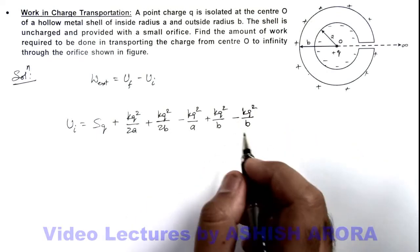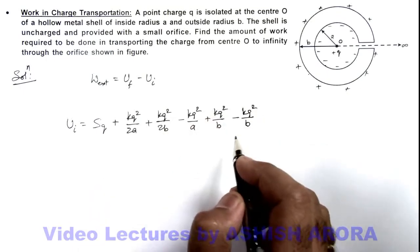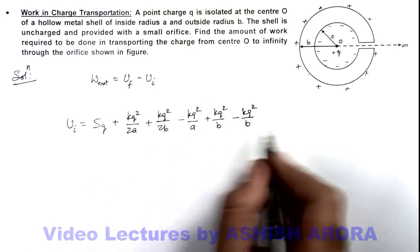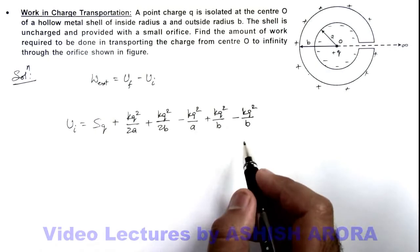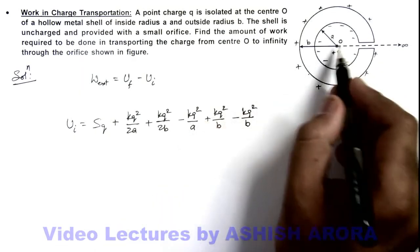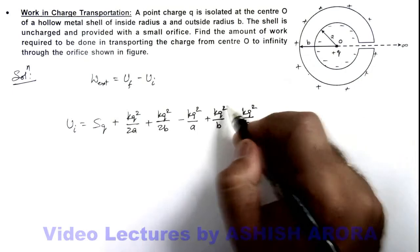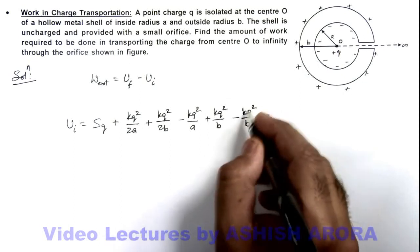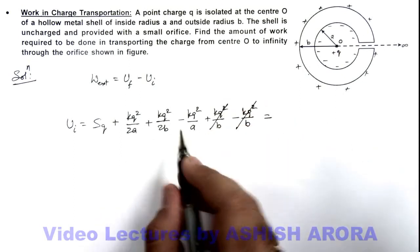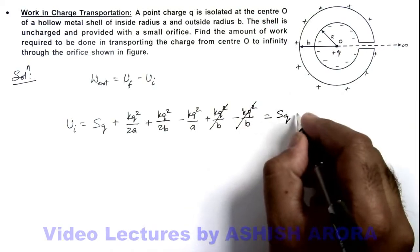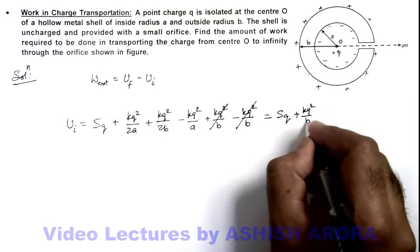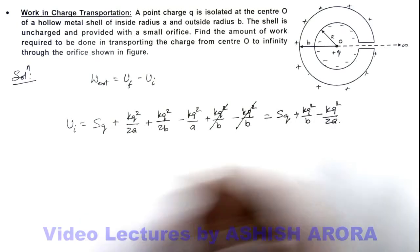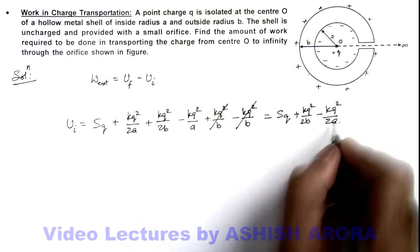So this is the total energy of the system, which includes the self energy of the three charges and the interaction energy of all pairs of charges. For these two it is -kq²/a, for these two +kq²/b, and for these two it is -kq²/b. So here, see what we are getting - these two terms will cancel out, and this will give us Sq + kq²/2b - kq²/2a. This is what we are getting.